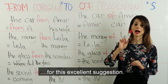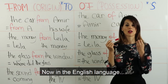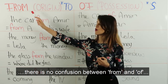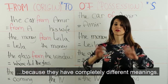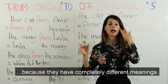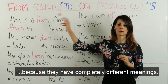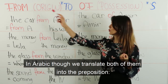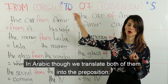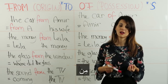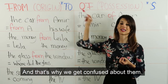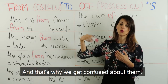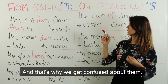بحب أشكر لؤلؤت السماء على هالاكتراح الممتاز. Now in the English language there is no confusion between 'from' and 'of' because they have completely different meanings. باللغة الإنجليزية ما في أي لخبطة بين هالكلمتين لأن إلهم معنى مختلف تماماً. In Arabic though, we translate both of them as the preposition 'من'. باللغة العربية منترجمهم تنيناتهم إلى حرف الجر 'من'. And that's why we get confused about them. وهيدا بيسبب لنا لخبطة.